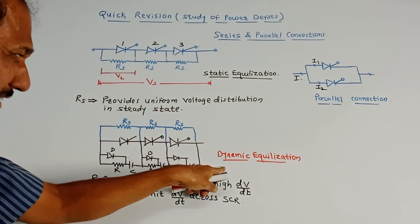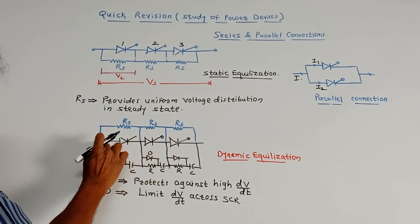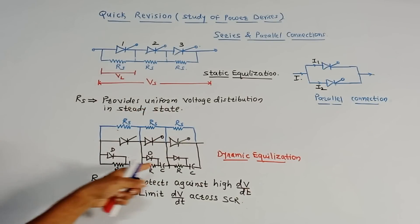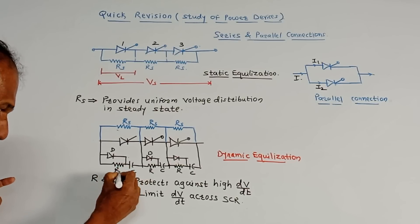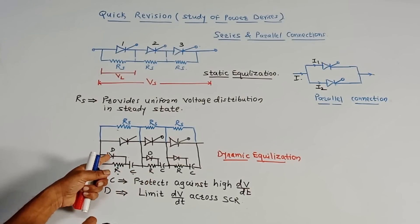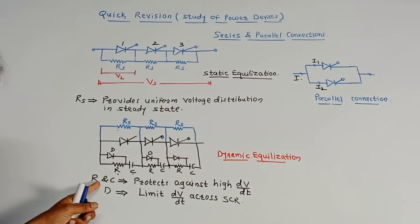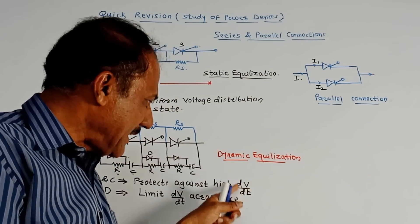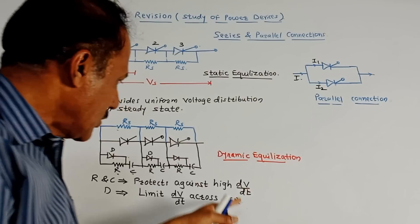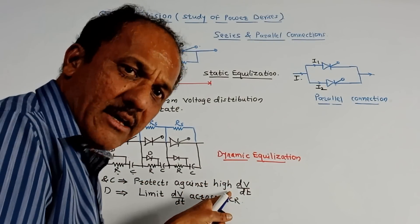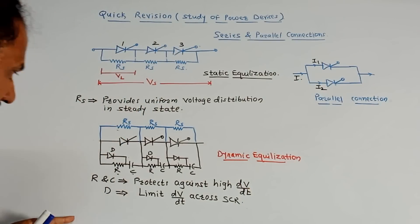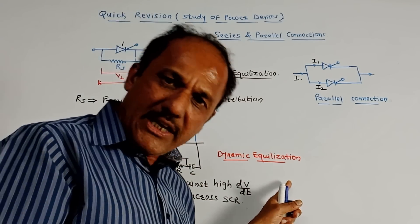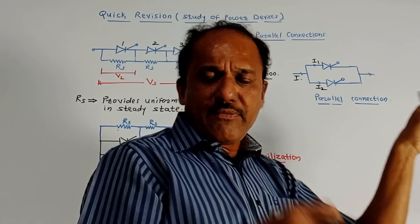The resistance RS maintains equal voltage distribution across all devices in the string. This is called the static equalization circuit. For the dynamic equalization circuit, an RC circuit — a resistor and capacitor — is connected in parallel with each SCR, and a diode is connected in parallel with the resistor R. The R and C combination protects against high dV/dt — that is, the rate of change of voltage — while the diode D is used to limit the dV/dt across the SCR.